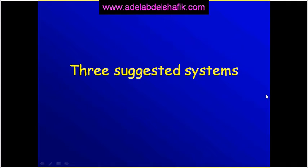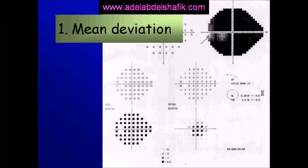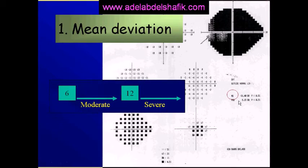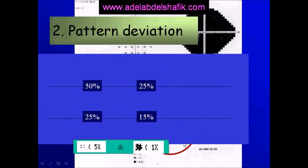The first system was published back in 1993 in the book 'Clinical Decisions in Glaucoma' by Hodbeck, Parrish, and Ederson. They postulated that we look at the mean deviation: if the mean deviation is less than 6, it's mild glaucoma; between 6 and 12, it's moderate; and if it's more than 12, then it's severe glaucoma. They then suggest looking at the pattern deviation.